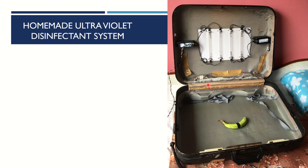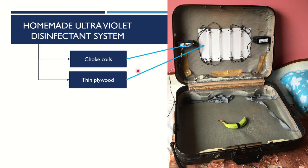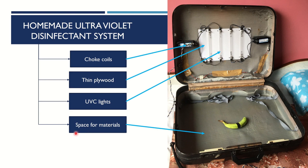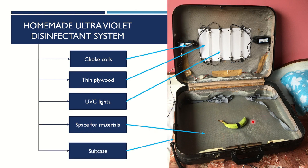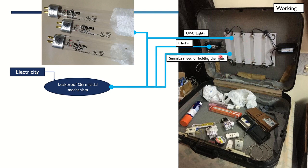This system is very simple to make. It does not require any complicated circuit or microcontroller. All it has is a choke coil — these are the choke coils — a thin plywood over which I have mounted four UVC lights. These are the same lights found inside any water purifier. There is a space for material, and a suitcase to contain everything inside so there is no leakage of radiation. The germicidal tubes are Philips TUV 11-watt UVC tubes, which you can get on Amazon — I'll include the link in the description.